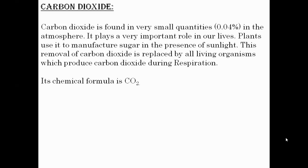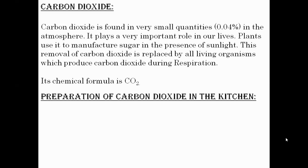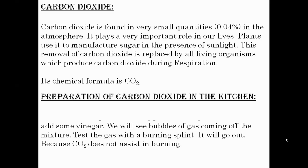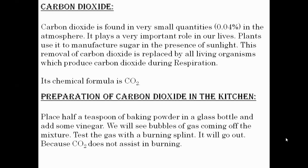How can we prepare carbon dioxide in the kitchen? First of all, we take one teaspoon of baking powder in a glass bottle, and then we add some vinegar. As we add more substance, we will see bubbles of gas coming off the mixture.